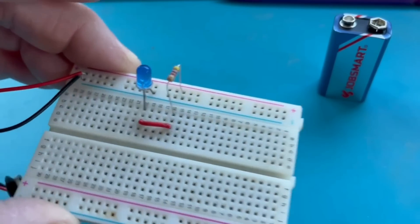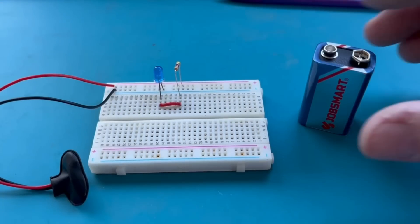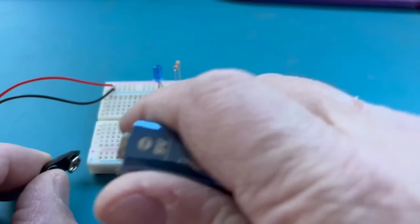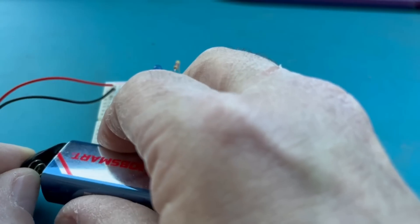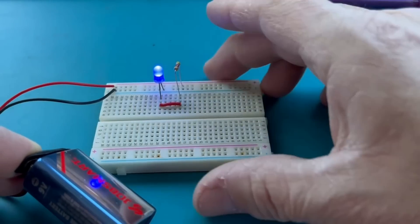So you can see that's pretty simple there. Now we have the snap connector in place. So now we should be able to plug the battery in, and if everything is connected correctly, we should be able to illuminate our LED. And there we go.